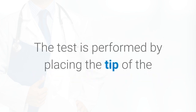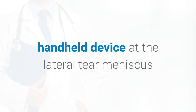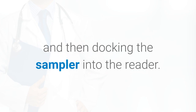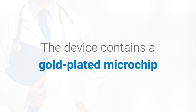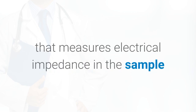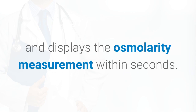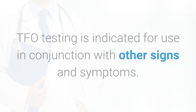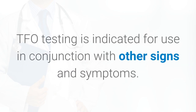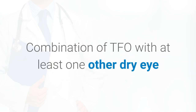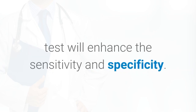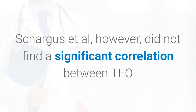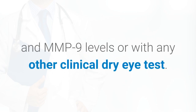The test is performed by placing the tip of the handheld device at the lateral tear meniscus and then docking the sampler into the reader. The device contains a gold-plated microchip that measures electrical impedance in the sample and displays the osmolarity measurement within seconds. TFO testing is indicated for use in conjunction with other signs and symptoms, as combination with at least one other dry eye test will enhance sensitivity and specificity. However, Chargis et al. did not find a significant correlation between TFO and MMP9 levels or with any other clinical dry eye test.